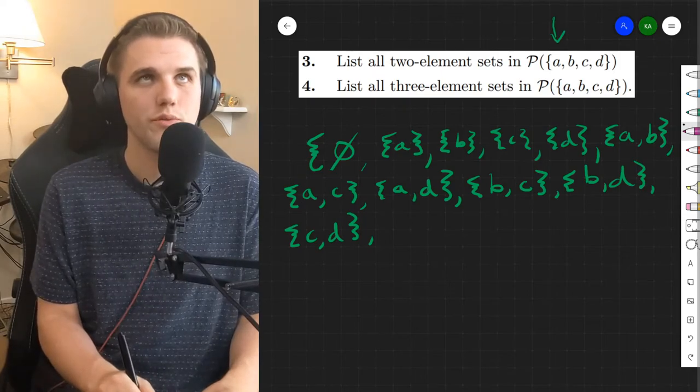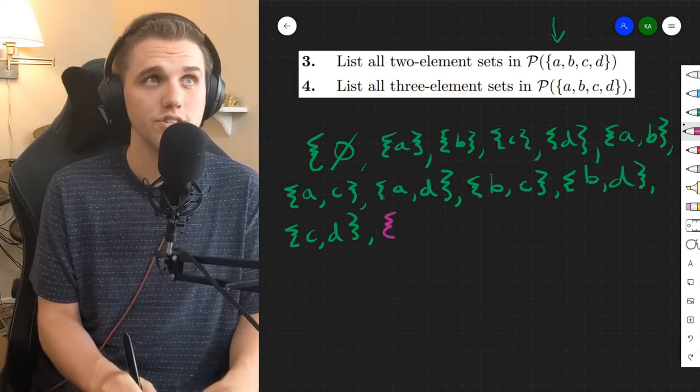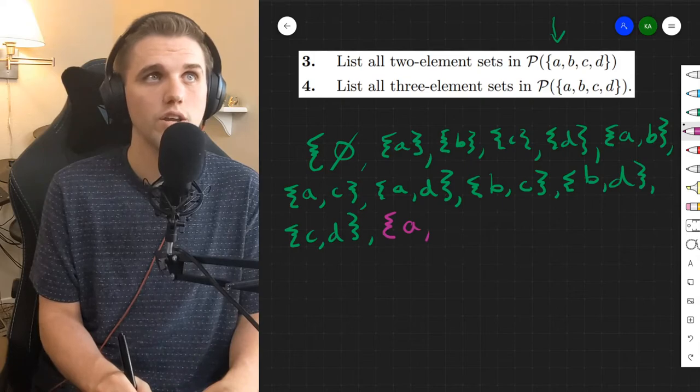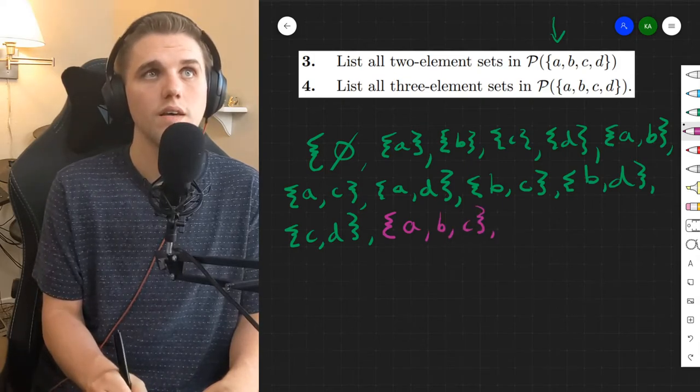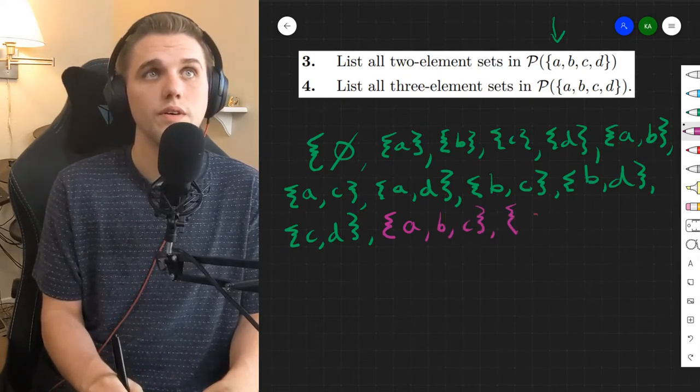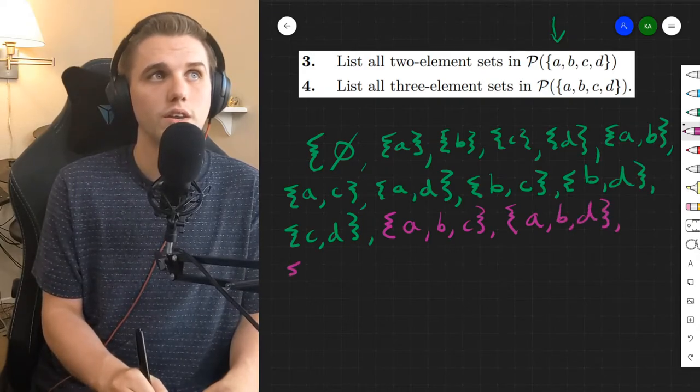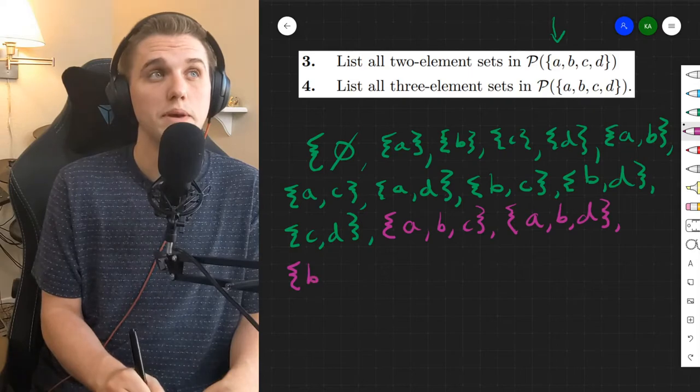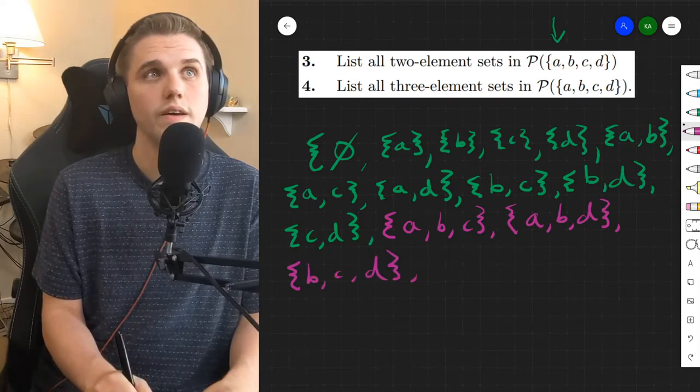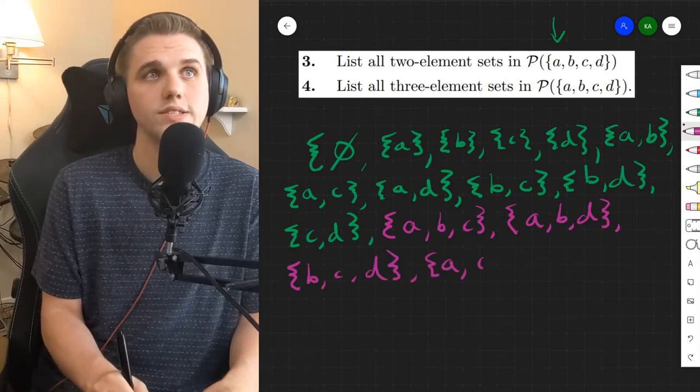What about the sets with three elements, or the subsets I should say of three elements? Well, we could do {a, b, c}. We could do {a, b, d}. We can do {b, c, d}, and {a, c, d}.